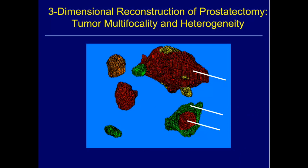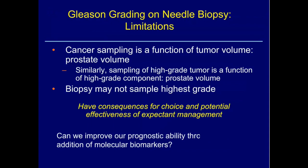By way of illustration, we do a lot of whole-mount prostates at our institution that we can three-dimensionally reconstruct. This is one pulled at random from over 600 in our library. Taking away everything benign, you can see that prostate cancer is a multifocal disease — here we have five separate tumor foci, with all different colors representing the heterogeneity of grade. A needle entering a red zone (pattern three) gives a 3+3 call; shifting slightly into green (pattern four) gives 3+4; a bit further and missing red entirely gives 4+4. This has real consequences for expectant management.